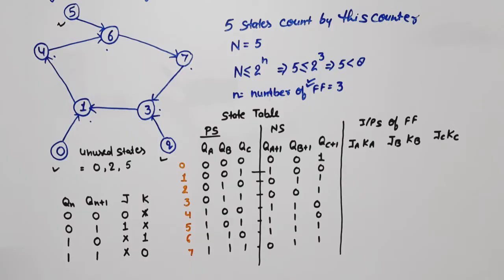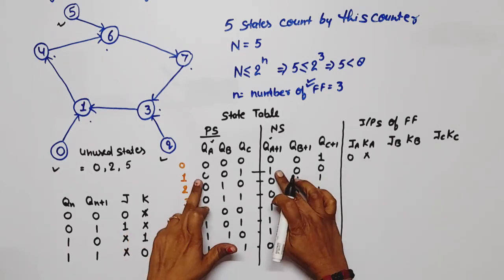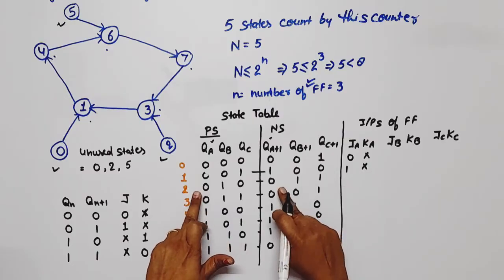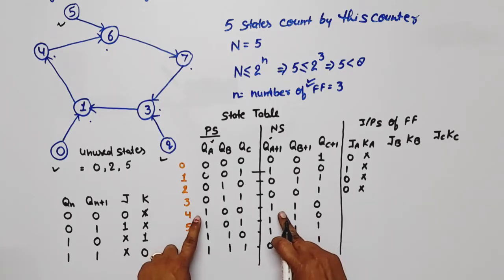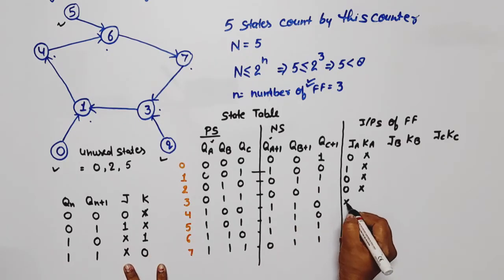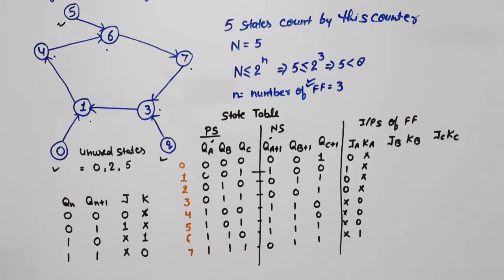For JA and KA, we observe QA and QA+1. The transitions give: 0→0: J=0,K=X; 0→1: J=1,K=X; 1→1: J=X,K=0 (three cases); 1→0: J=X,K=1. For JB and KB, observing QB and QB+1: 0→0 for two cases gives J=0,K=X; 1→1 gives J=X,K=0; 1→0 gives J=X,K=1; 0→1 gives J=1,K=X for two cases; 1→1 for last two cases gives J=X,K=0.